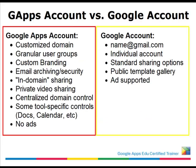There are some major differences between the regular commercial Google account and a Google Apps for Education account. The first thing you'll notice is the extension on the username or email. Your Gmail account is your username at gmail.com. However, your Google Apps account will be your name at whatever your school's domain is — so that could be your name at libertyschool.edu or something similar. It's a custom URL.